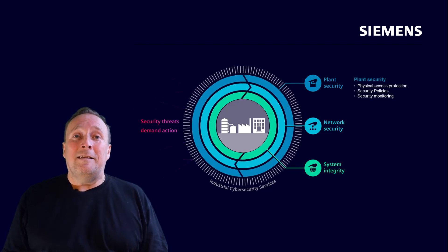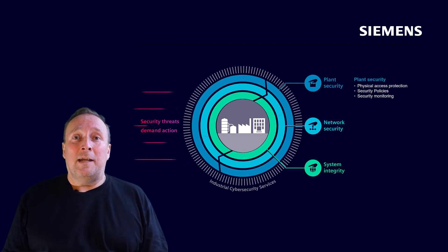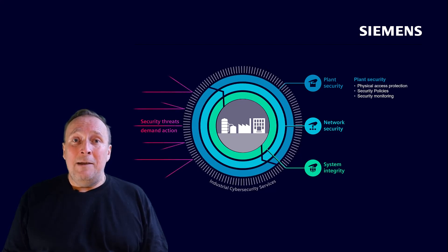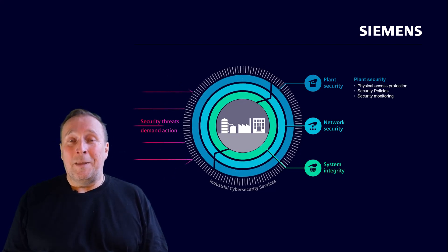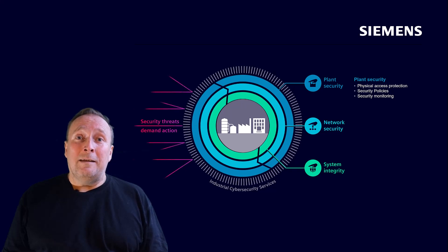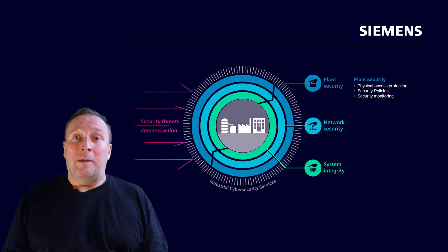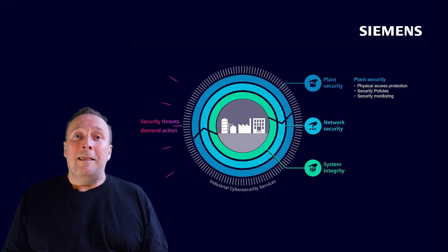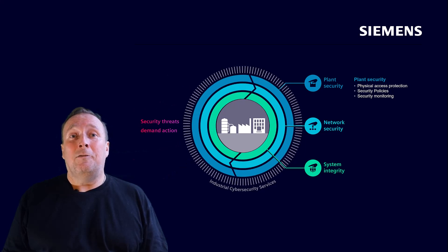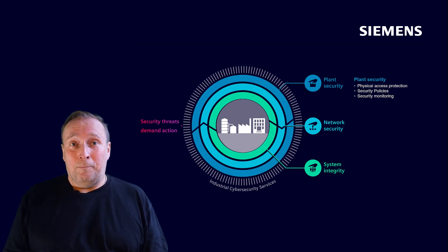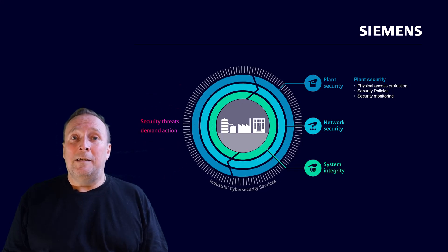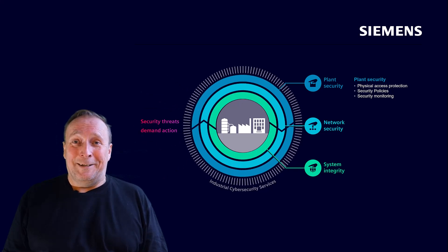Plant security is about access protection to the plant — for example, ensuring that not just anyone can access the plant. Also, that personnel are regularly trained, that the infrastructure is made secure, and that security-relevant patches for the IT and industry systems are regularly carried out. Plant protection must hereby be ensured by the plant operator.